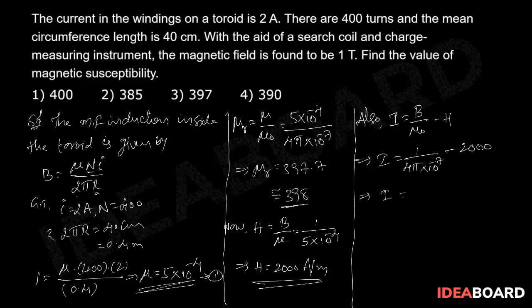From this if you simplify the above we get the intensity of that magnetization simply we will get 7.95 into 10 power 5 ampere per meter.